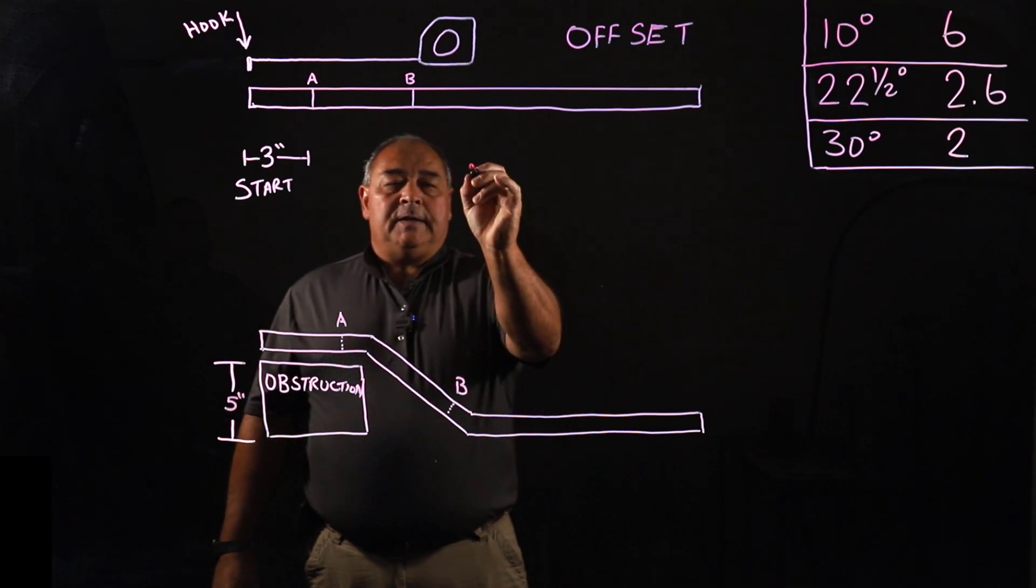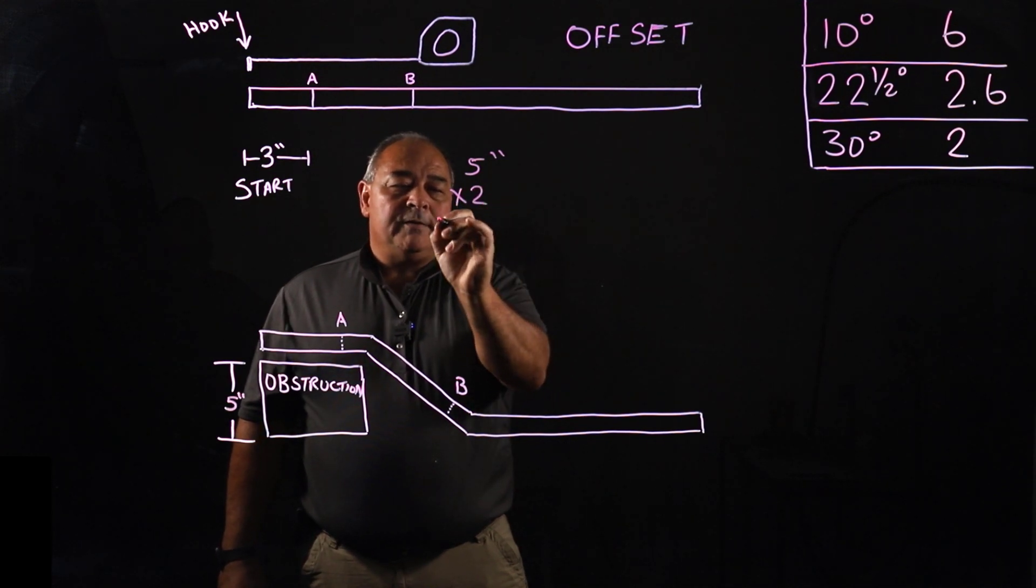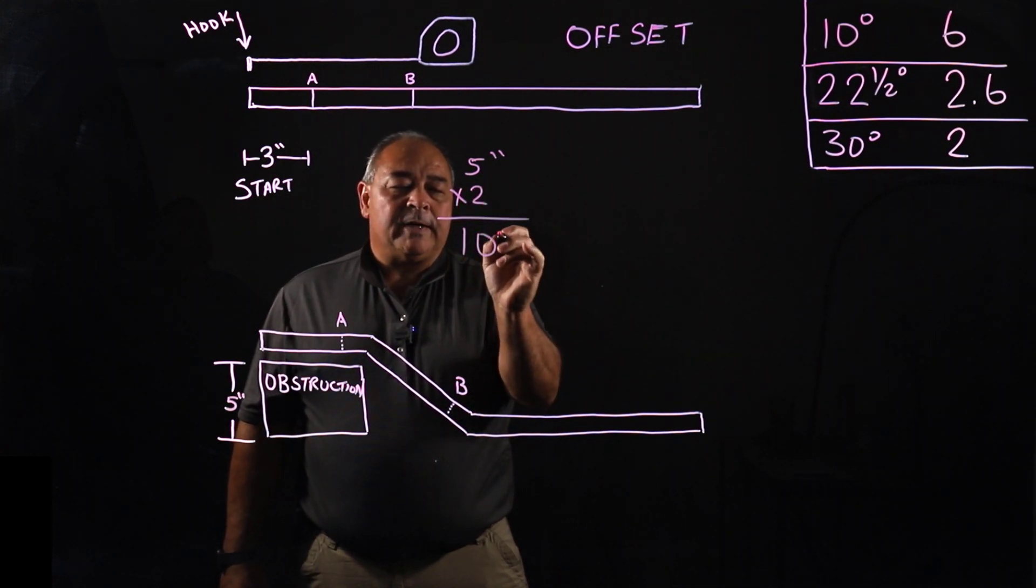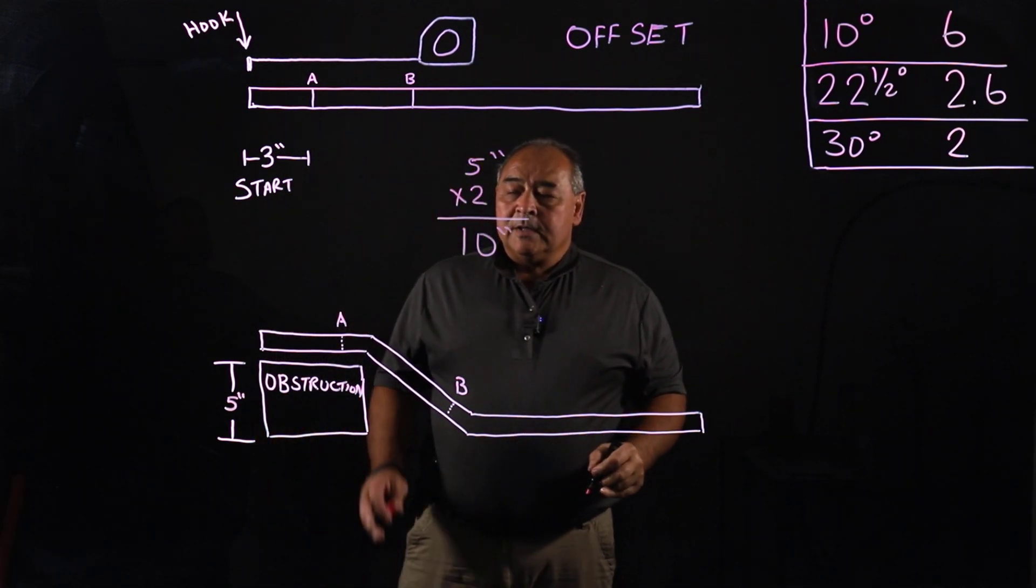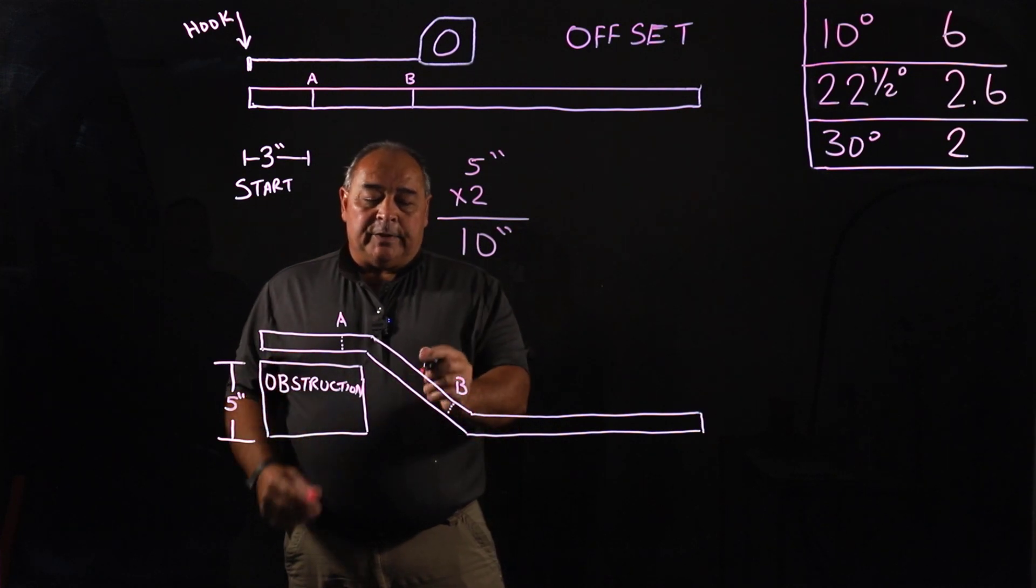So the math would look like this: 5 inches times 2. Well, obviously that's very simple, you didn't even have to write that down. Equals 10 inches. So from A to B, our marks would be 10 inches for a 30 degree offset.